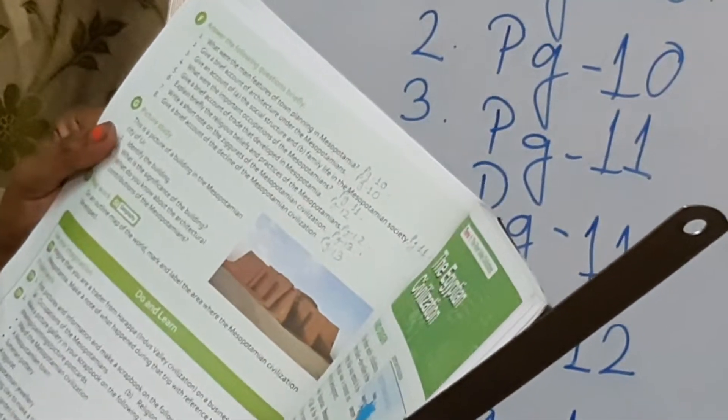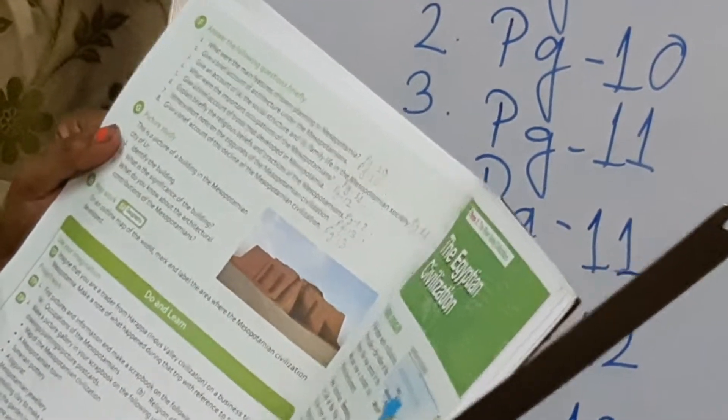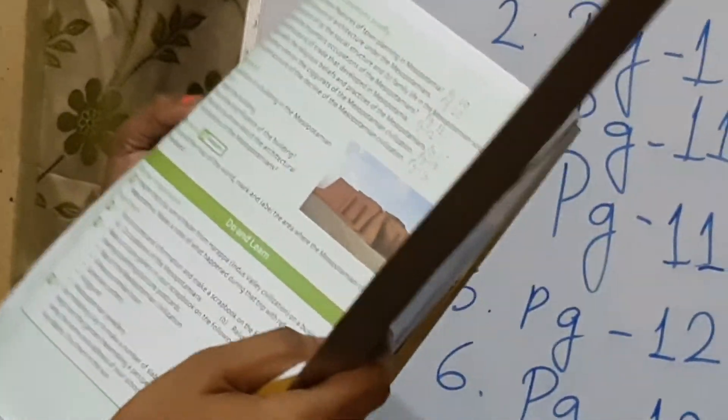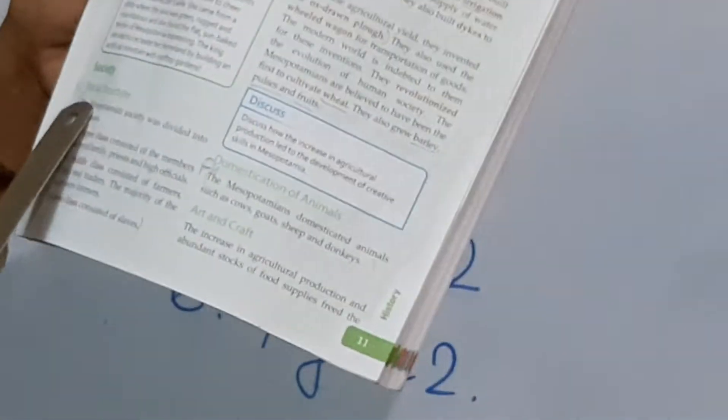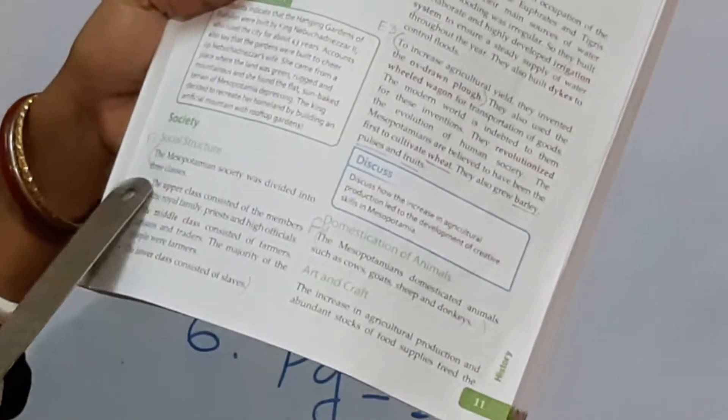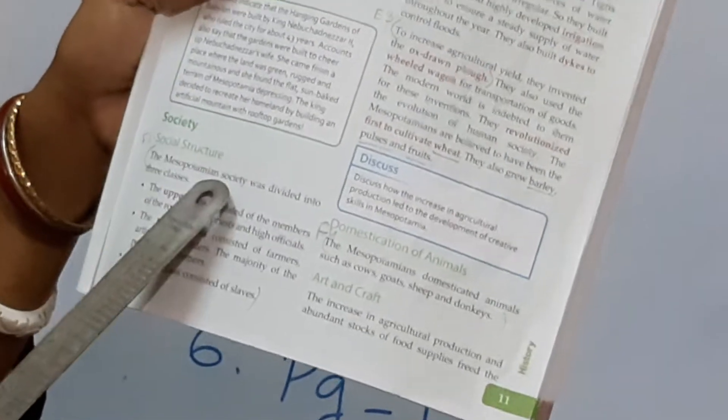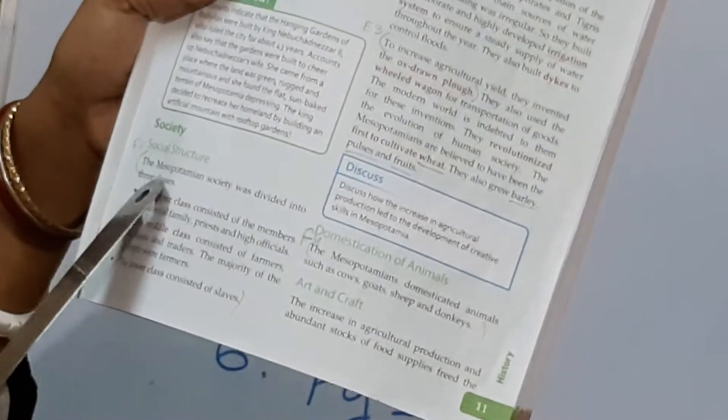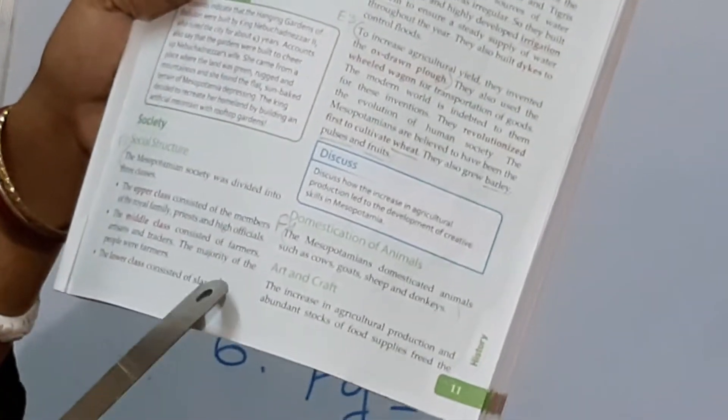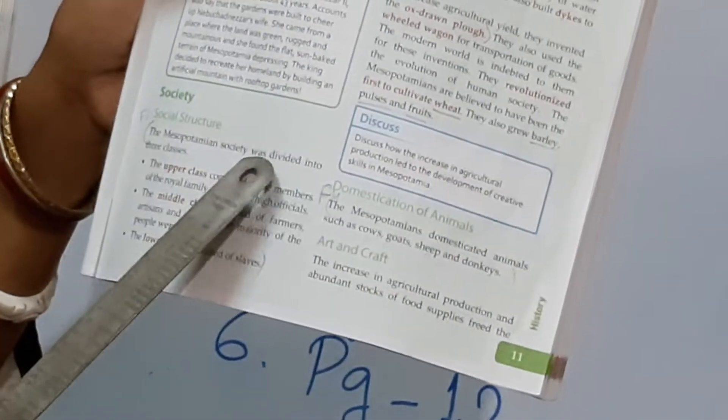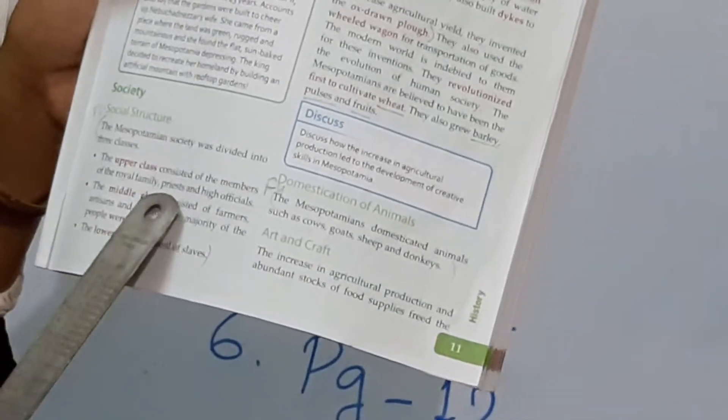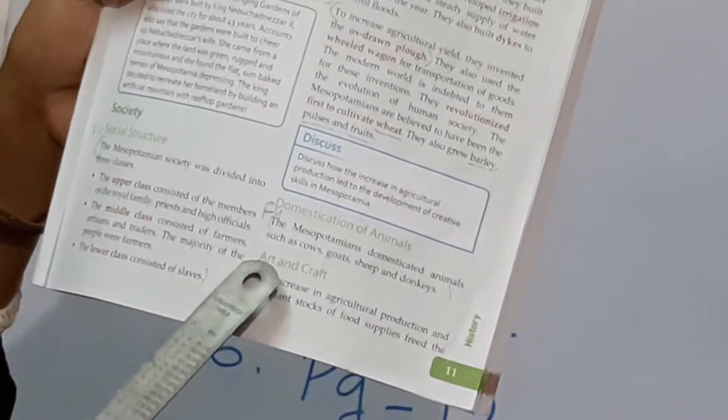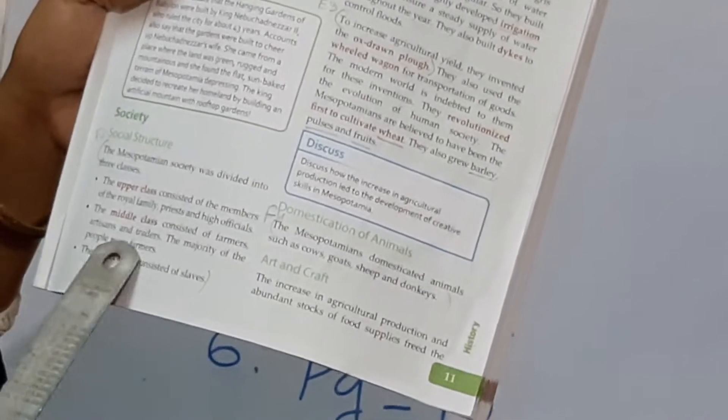Then question number 3. You have to take out page number 11. Give an account of the social structure and family life in the Mesopotamian society. Here family life - you have to write about family life and social structure. So first you will mark the social structure under the heading society. So right from the first to the last you will mark this answer. The Mesopotamian society was divided into 3 classes. The upper class consisted of the members of the royal family, priests and high officials. Middle class consisted of farmers, artisans and traders. The majority of the people were farmers. The lower class consisted of slaves. So from first to last is this answer.